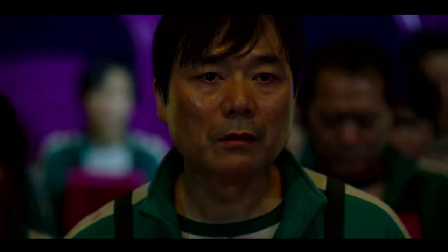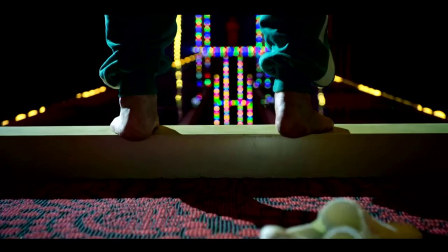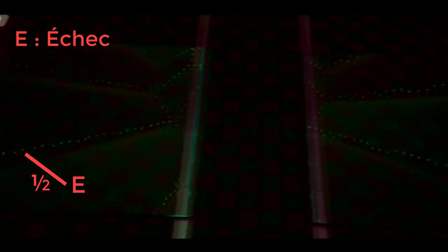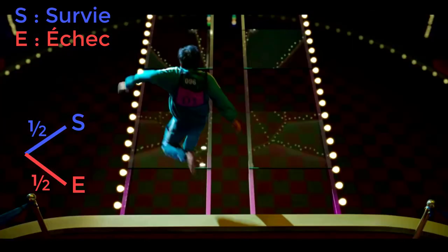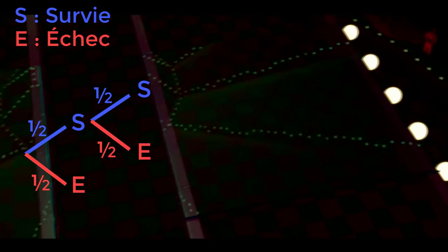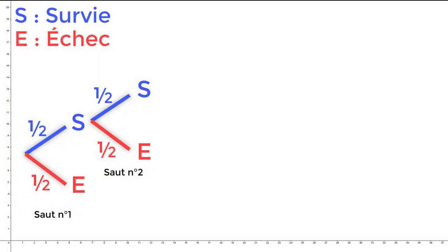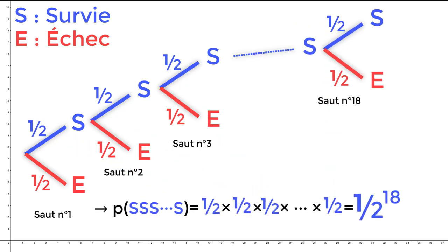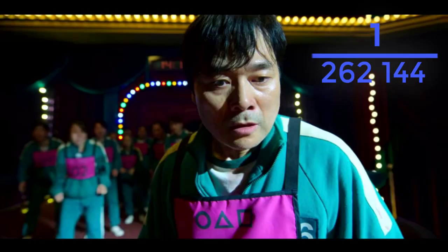L'ordre de passage est imposé, tant pis pour le premier qui doit donc se lancer. Quelle est alors sa probabilité de parvenir vivant jusqu'au bout du pont ? Pour le premier saut, il a une chance sur deux de sauter sur la plateforme fragile, et c'est la chute, échec donc. Sinon, il a une chance sur deux de sauter sur la plateforme solide. S'il choisit cette bonne plateforme, il aura à nouveau les mêmes probabilités pour la plateforme suivante. 50% de chances de tomber et 50% de chances de survivre. La probabilité de survie après deux plateformes est donc de 1/2 × 1/2, soit une chance sur 4. En poursuivant le raisonnement, on peut déterminer la probabilité de survivre aux 18 plateformes. 1/2 × 1/2 × 1/2 × 1/2 etc. soit 1/2 à la puissance 18. Notre malheureux candidat numéro 1 a donc une chance sur 262,144. C'est très peu.